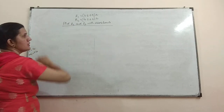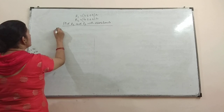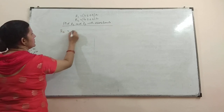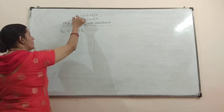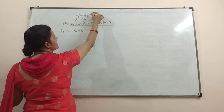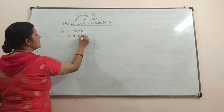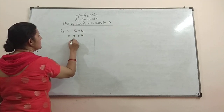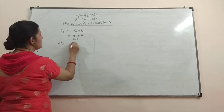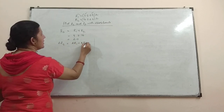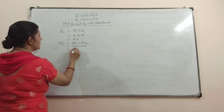You have to find the resistances in series as well as in parallel. The resistance in series RS is equal to R1 plus R2. This is the measured value of R1, which is equal to the true value plus the absolute error. So RS is 4 plus 16, which equals 20. Then you have to calculate delta RS, which is delta R1 plus delta R2. The value is 0.5 plus 0.5, that is 1.